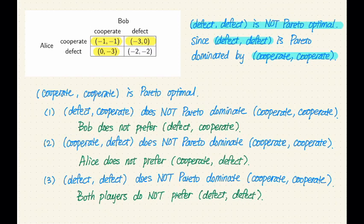The reasoning for the other three outcomes is very similar. Let's look at why cooperate-cooperate is a Pareto optimal outcome. In order to verify that this is a Pareto optimal outcome, we need to verify three things: we need to verify that this outcome is not Pareto dominated by any of the other three outcomes. So we need to verify that defect-cooperate does not Pareto dominate cooperate-cooperate, and that cooperate-defect does not Pareto dominate it.